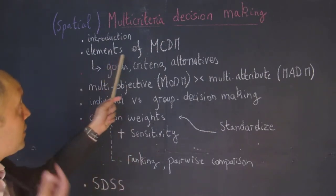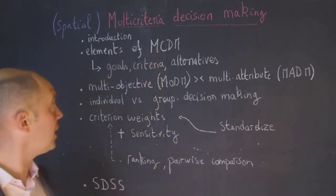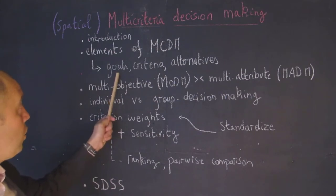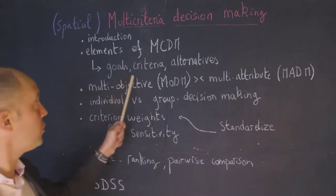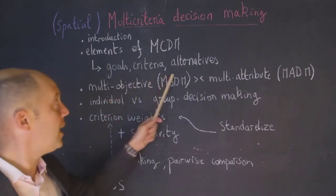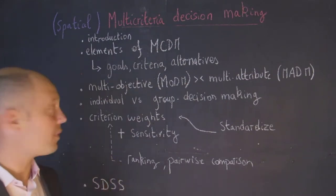I'm going to discuss elements of multi-criteria decision-making. Those include goals or objectives, criteria, as well as alternatives when we have multiple alternatives to choose from.